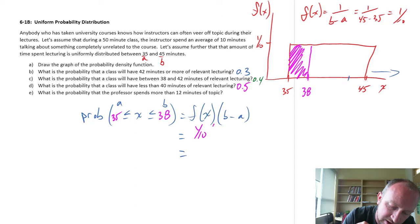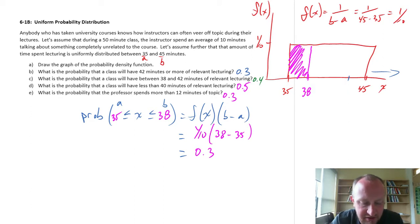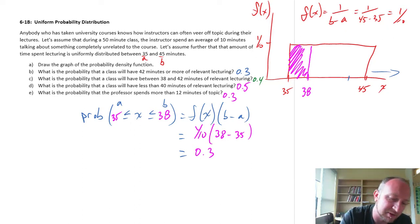1 tenth times 38 minus 35. So this is 1 tenth times 3. So here's 0.3. So 30% chance that this professor spends more than 12 minutes off topic, which is the same as saying less than 38 minutes on topic, because the maximum class is 50. 50 minus 12 minutes. Of course that's where our 38 comes from.